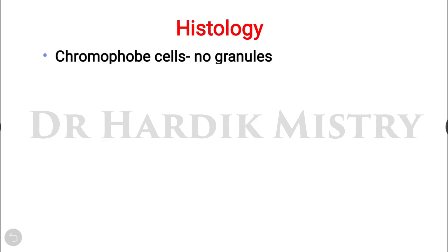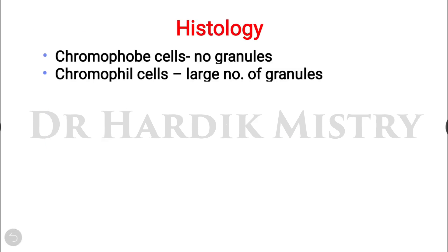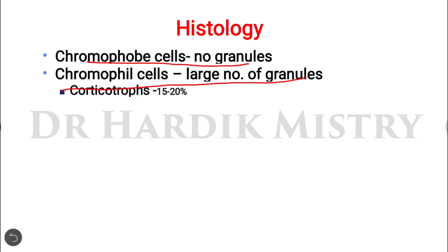In the histology of the pituitary gland, considering the anterior pituitary, there are two main types of cells: chromophobe cells, which do not have any granules, and chromophil cells, which are large granular cells present in large numbers.